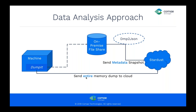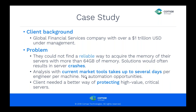You have two paths for analysis. You use DumPIt and can send the entire memory image directly — you can compress it even as a zip file and we handle decompression on our side — or you can store it in your on-premise file share. Or you run DMP to JSON and just send us the actual snapshot, and we would analyze that for you and give you the opportunity to look at the content.